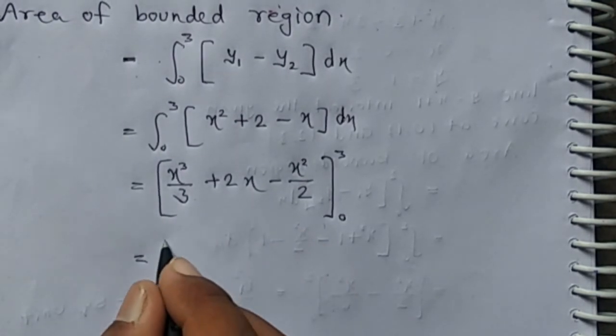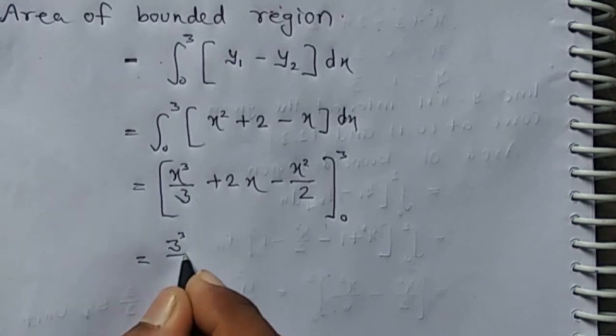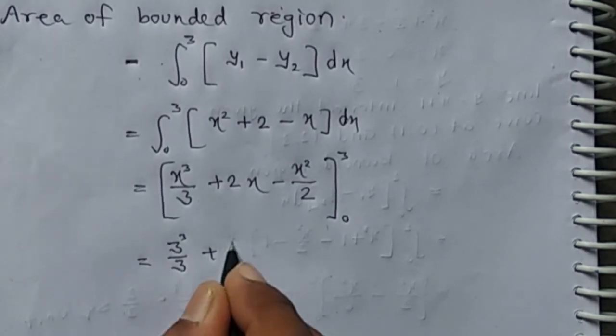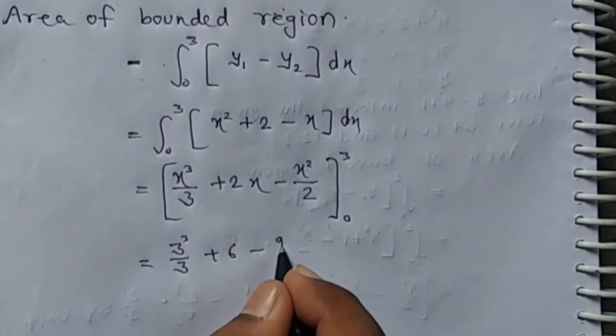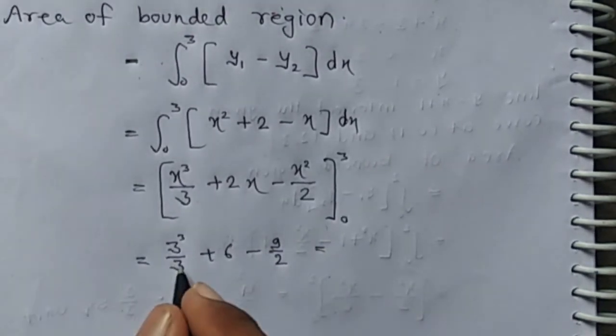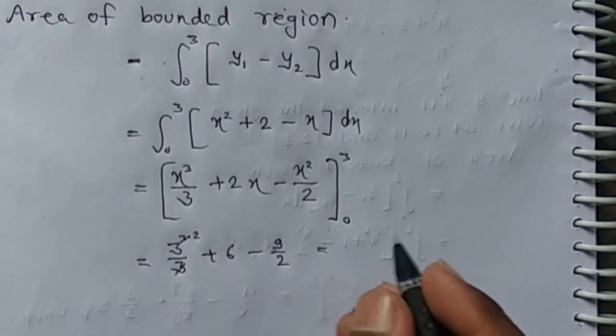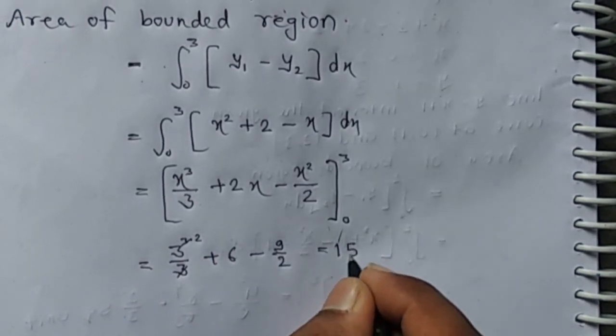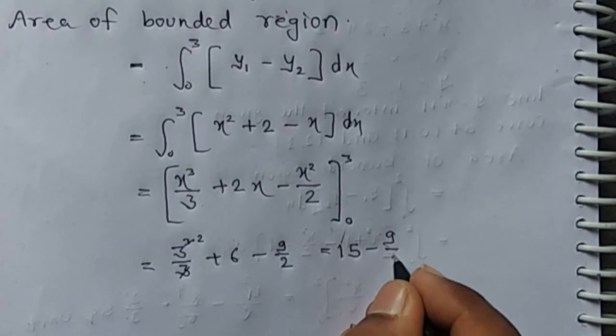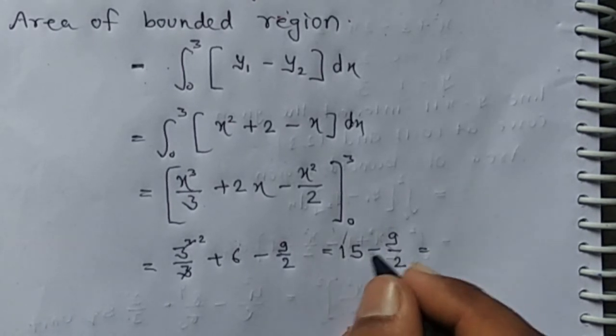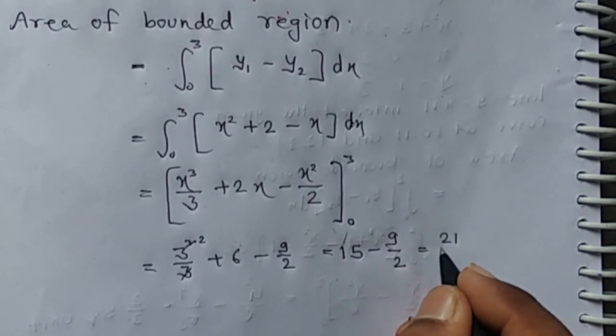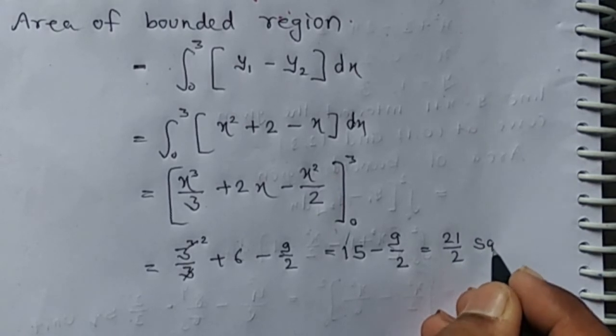3 cubed by 3 plus 6 minus 9 by 2. We have 6 plus 9, which is 15, minus 9 by 2, and it is 30 minus 9, which is 21 by 2.